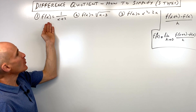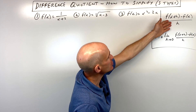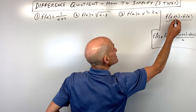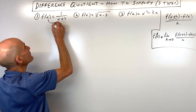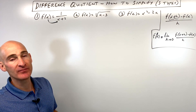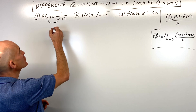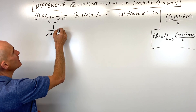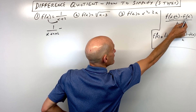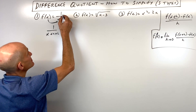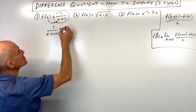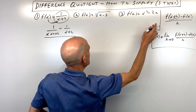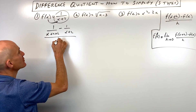For number one, we're going to follow the difference quotient formula. Whatever's in the parentheses goes in for x on the right side of the equation — that's the way functions work. So we've got one over x plus h plus two, minus f of x, which is one over x plus two, all divided by h. That's our difference quotient.